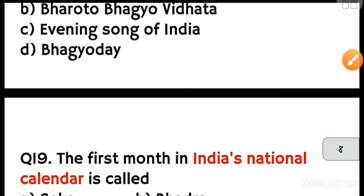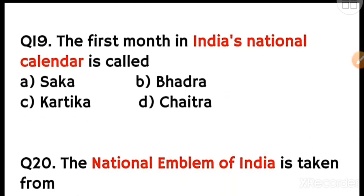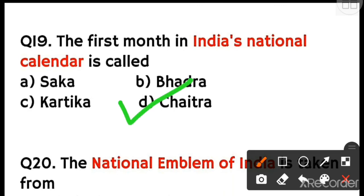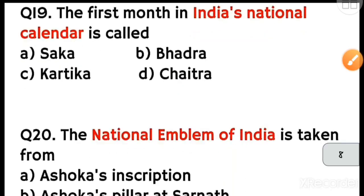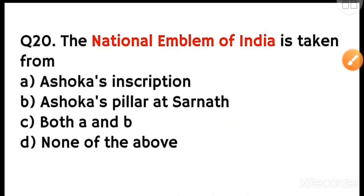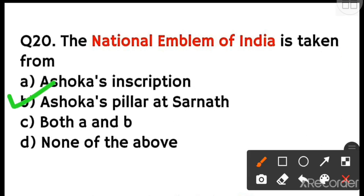Moving to the next question: what is the first month in India's national calendar? Options are Saka, Bhadra, Kartika, or Chaitra. Chaitra is the first month in India's national calendar — option D is correct. Next: India's national emblem is taken from where? Options are Ashoka's inscription, Ashoka's pillar, both, or none. The national emblem of India is taken from Ashoka's pillar at Sarnath — option B is the correct answer.